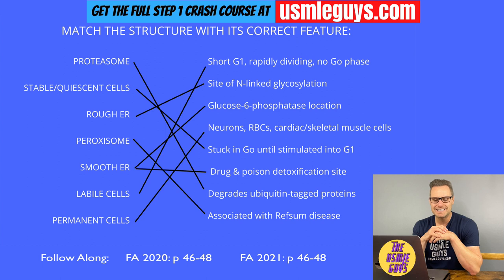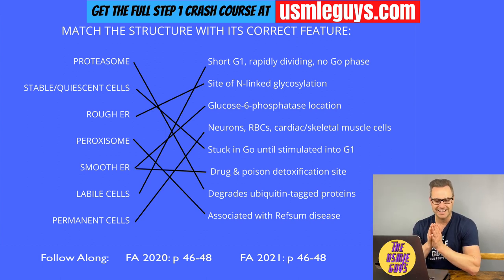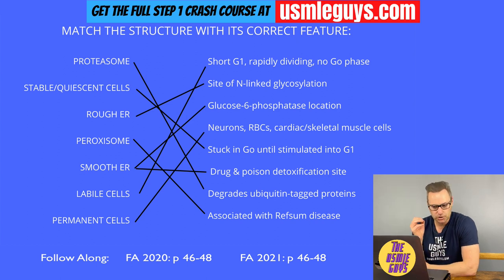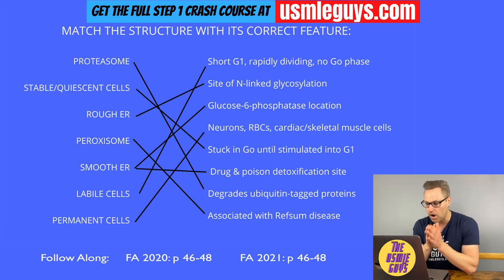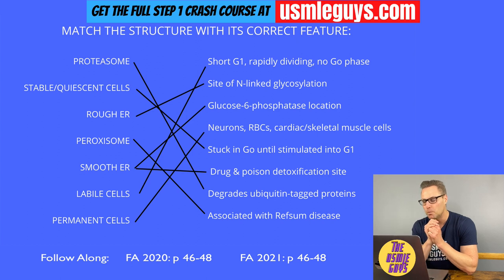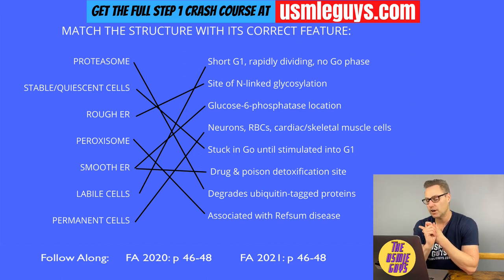Zellweger syndrome is inherited in an autosomal recessive manner. It is a disorder of the biogenesis of peroxisomes caused by a mutation in the PEX1 gene, which is needed to make the peroxisomal biogenesis factor 1 protein. This condition is characterized by seizures, hypotonia, and death.